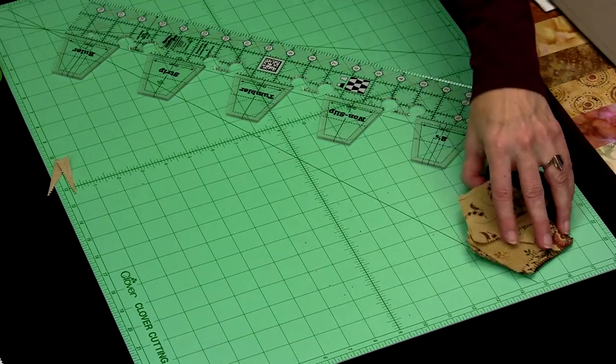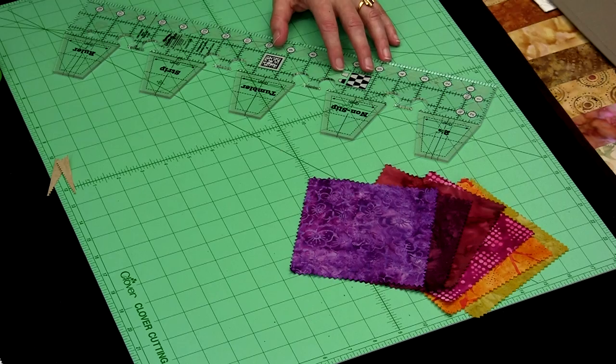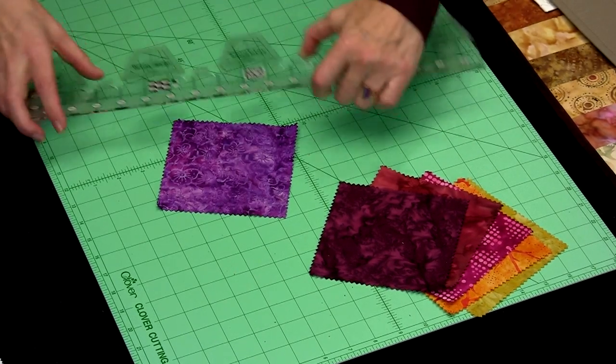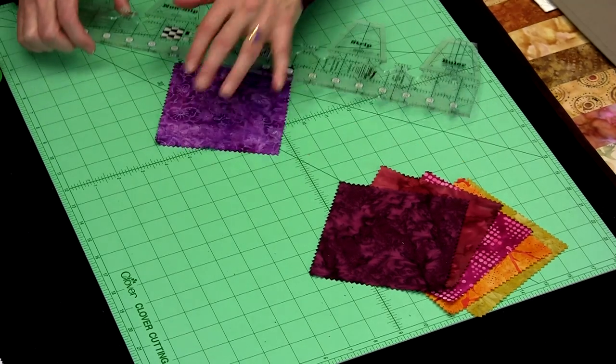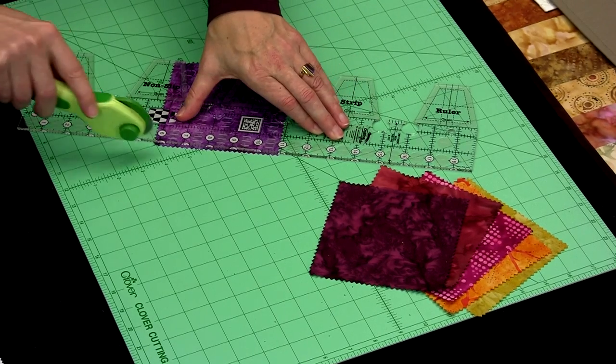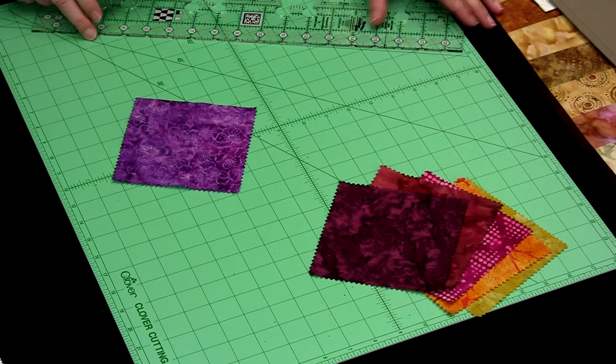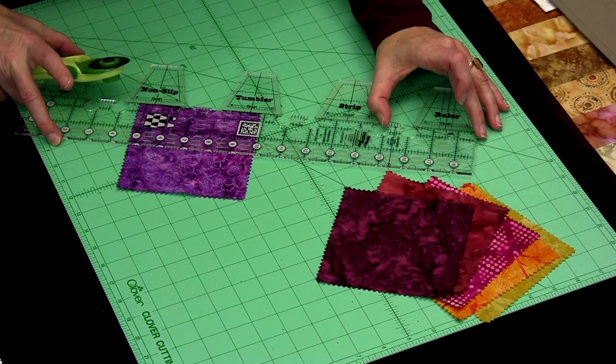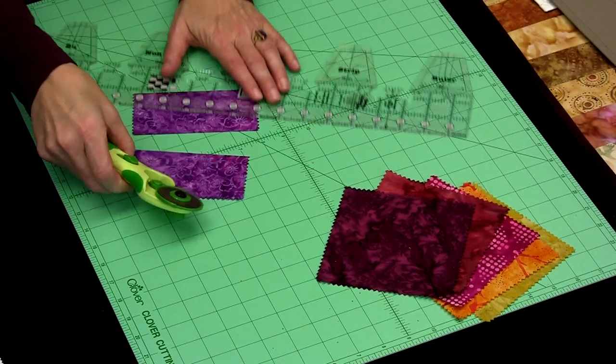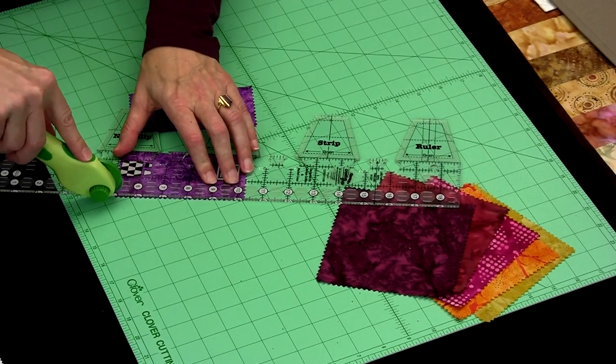You can also work with 5 inch charm squares. We will use the ruler to cut this into two 2½ inch strips. So I can cut this straight. There we go. Two 2½ inch strips. And here's our second.